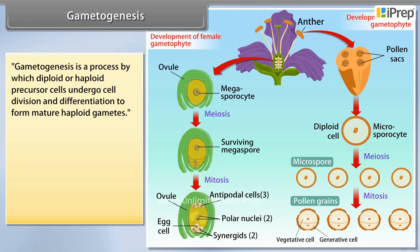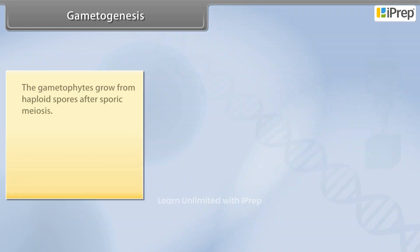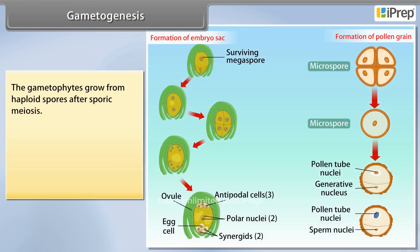Gametogenesis occurs by meiotic division of diploid gametocytes into various gametes, or by mitotic division of haploid gametogenic cells. For example, plants produce gametes through mitosis in gametophytes. The gametophytes grow from haploid spores after sporic meiosis.